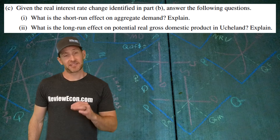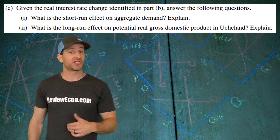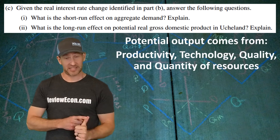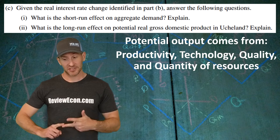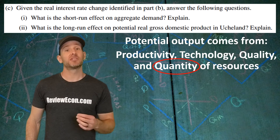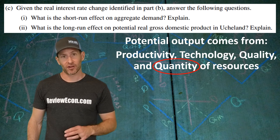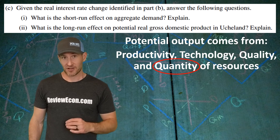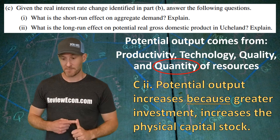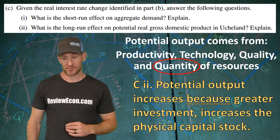The second part of question C asks us to identify what will happen to the potential real GDP output of Uche Land. We just saw an increase in gross investment, and there are a few things that change the potential output of an economy: productivity, technology, quality of resources, and quantity of resources. Increases in gross investment impact the quantity of resources, since gross investment is primarily purchases of capital goods. Capital goods are used in the production of all goods, so potential output will increase. The answer is: potential GDP output will increase because greater investment leads to an increase in physical capital, or the capital stock.